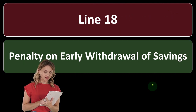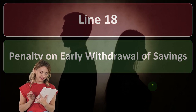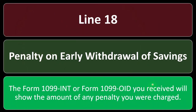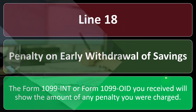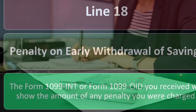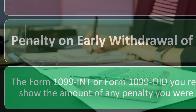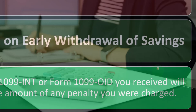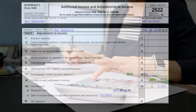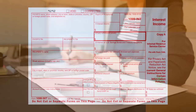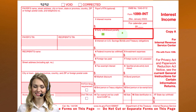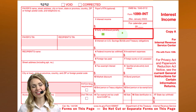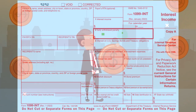Line 18 — penalty on early withdrawal of savings. When you have Form 1099-INT or Form 1099-OID, it will show the amount of any penalty you were charged. If you have interest income, your financial institution will typically be required to issue a 1099-INT or OID, which we discussed in prior presentations on the income side. If you were subject to penalties, they provide that penalty item which may result in a deduction on line 18. It's a straightforward, easily identifiable item for data input — you don't see it too often, because hopefully you and your clients aren't subject to penalties or having to pull money out early.